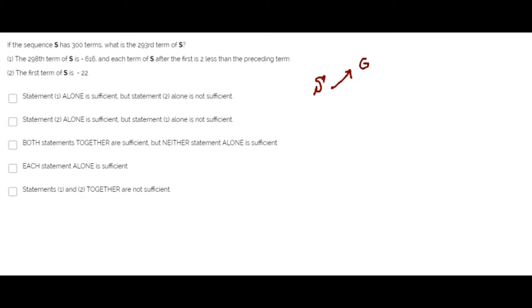If S is a geometric sequence, the 293rd term can be found by the formula: the first term times the common ratio raised to 293 minus 1.